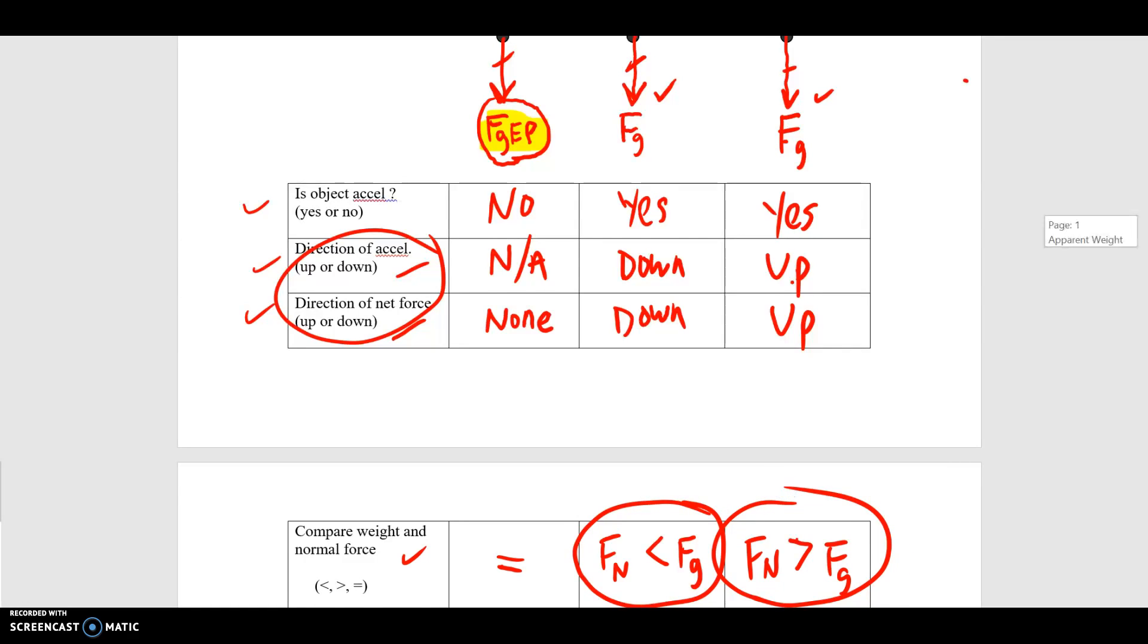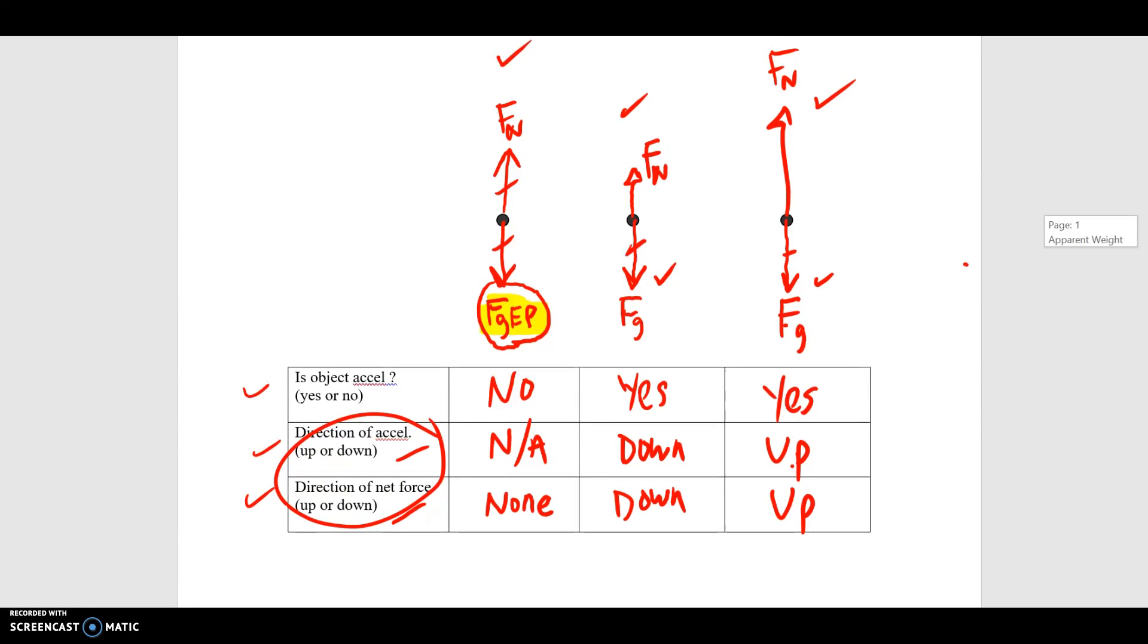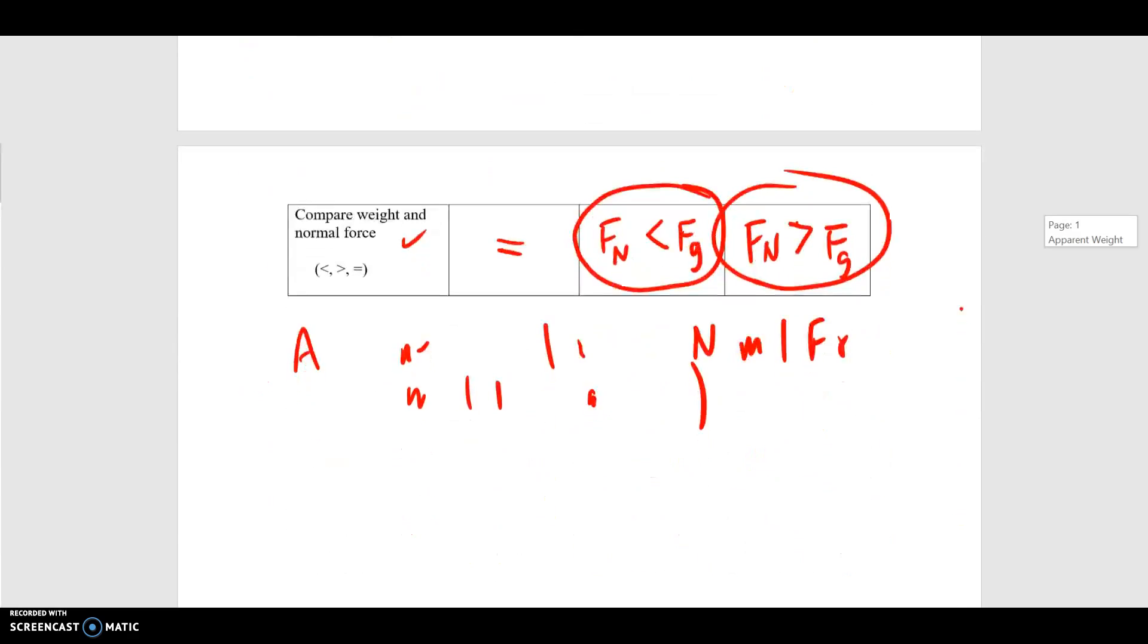It turns out, in this case, the normal force is changing, just as the reading on the scale was changing. And that is what we call the apparent weight.